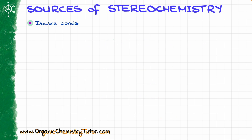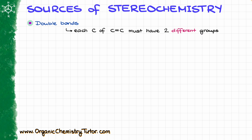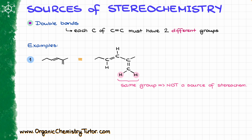Moving on to the next source of stereochemistry: double bonds. If the atoms of a double bond — typically carbons — have two different groups on each carbon, then it can also be a source of stereochemistry. For example, this molecule has two double bonds. Upon closer inspection, the bottom double bond has two of the same group — two hydrogens — which means that is not a source of stereochemistry and we can ignore it.